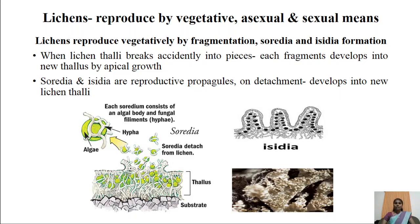Fragmentation is brought about by aging of the lichen thallus and also by accidental means. In aging, the cells in the lichen thalli become inactive, and some cells break into smaller pieces called fragments. These fragments by their apical growth develop into new individual lichen thalli.